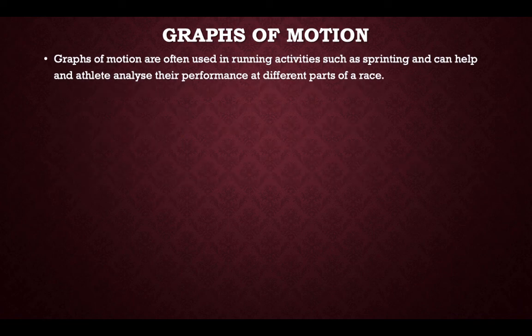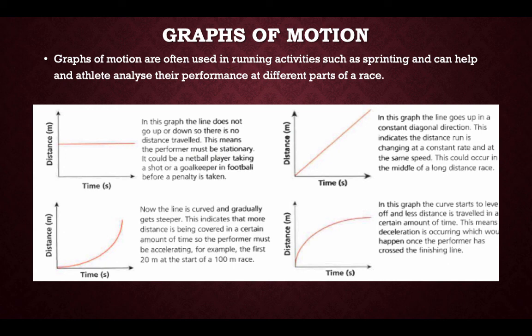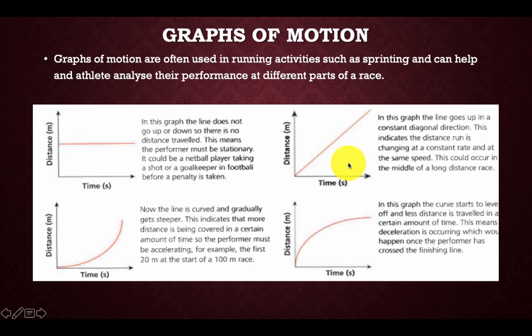Graphs of motion are often used in running activities such as sprinting and can help an athlete analyse their performance at different parts of a race. In the first example, the graph does not go up so there is no distance travelled — the performer is stationary, such as a netballer taking a shot. In the second example, the graph goes up in a straight, consistent diagonal, indicating distance is changing at a constant rate — the same speed, as in the middle of a long distance race.